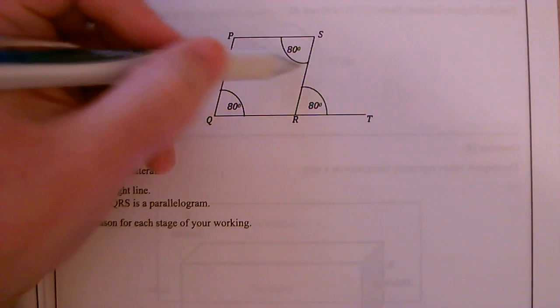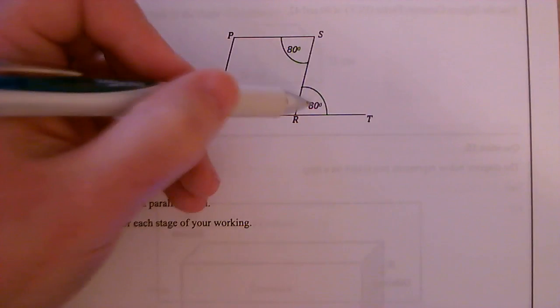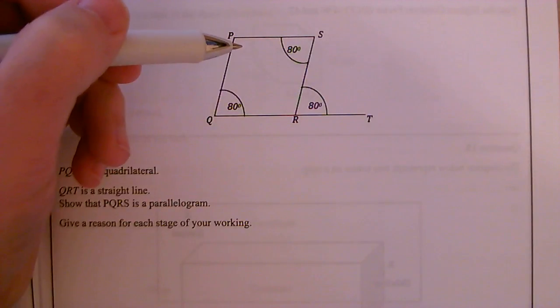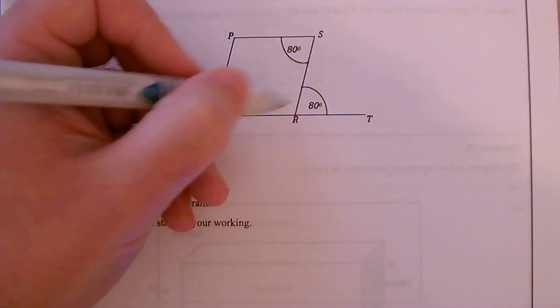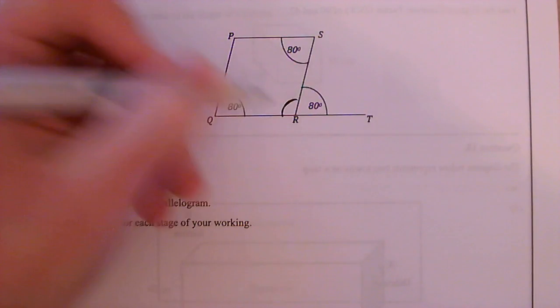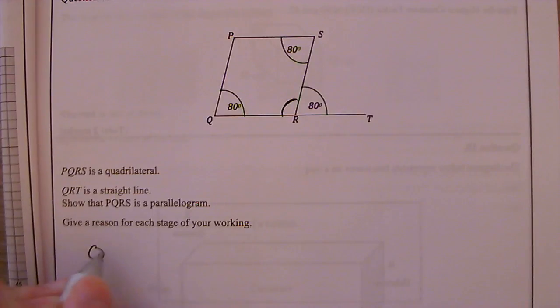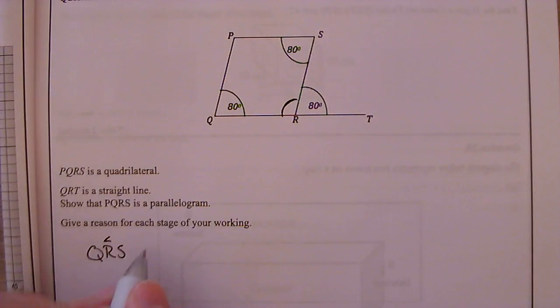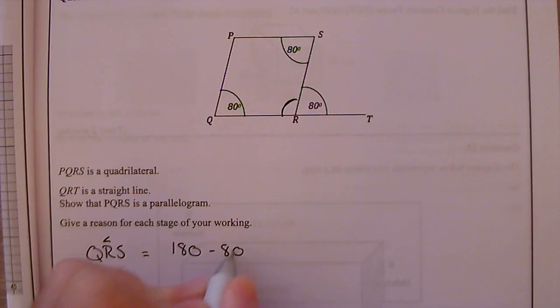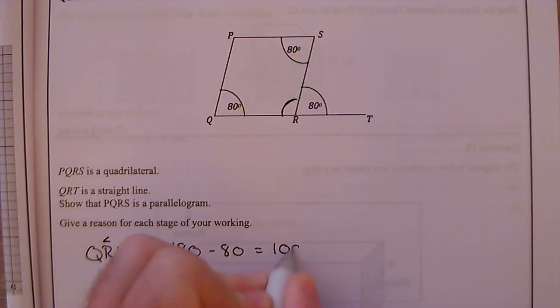OK, so I know this here is 80, I know this is 80, and that this is 80. I know that QRT is a straight line, which means that this angle here, so QRS, that's the angle where R is, is going to be 180 minus 80, which is 100 degrees.